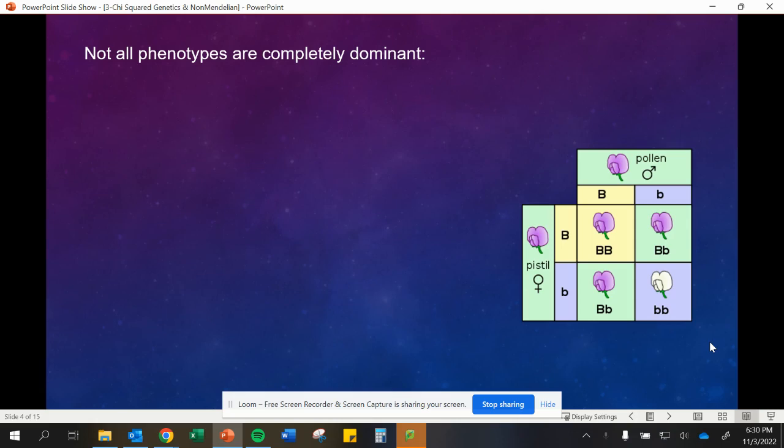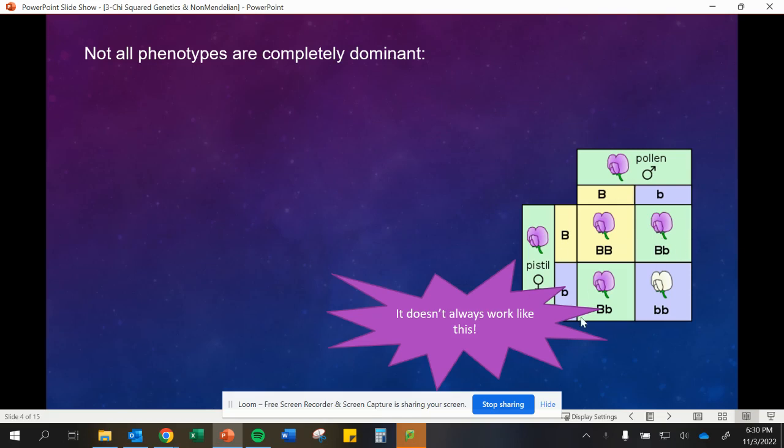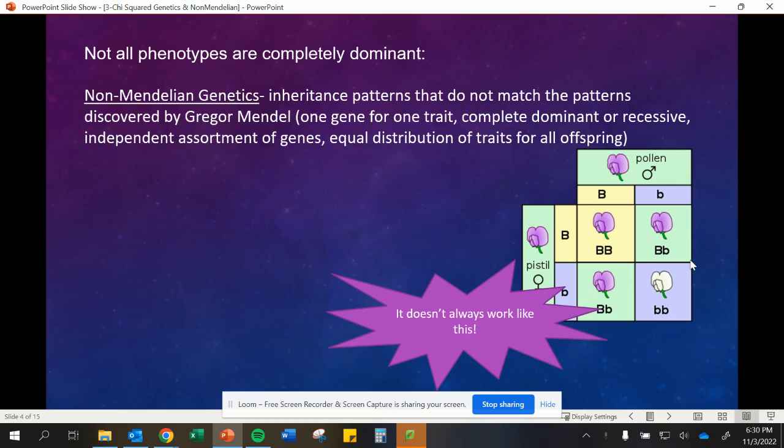Not all phenotypes are going to be completely dominant or completely recessive. Non-Mendelian genetics is looking at inheritance patterns that don't exactly match this idea of genetics. There's several different things that can cause this, like incomplete dominance, if we have more than one gene corresponding to a particular trait, independent assortment of genes not being random. There's lots of different things that can affect this, and we're going to go through several different types of examples.